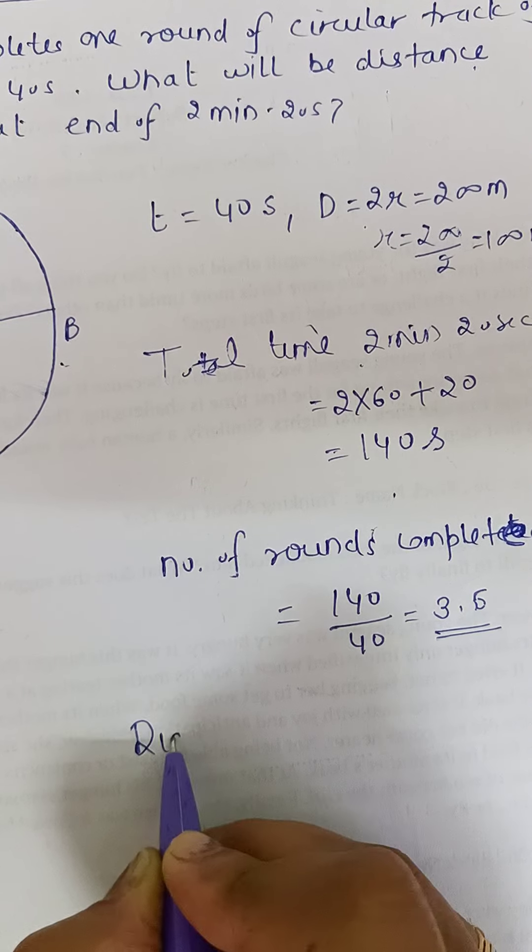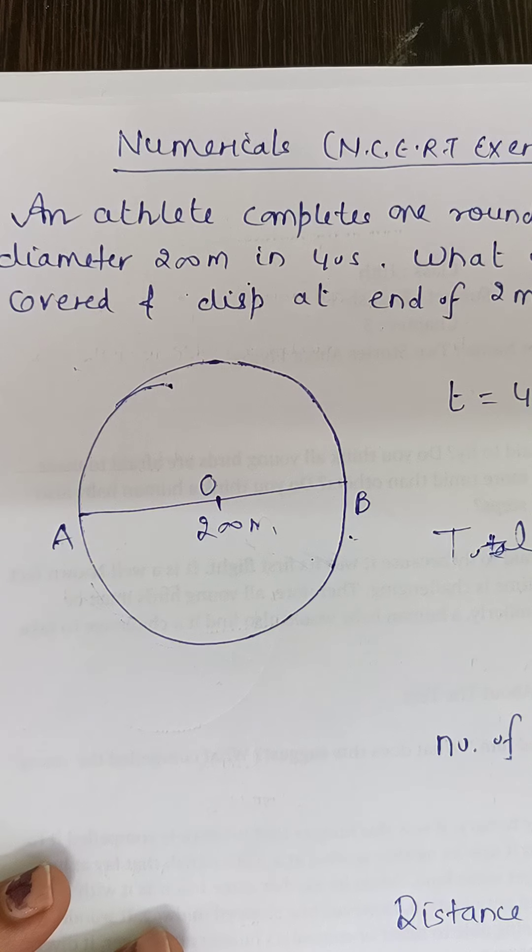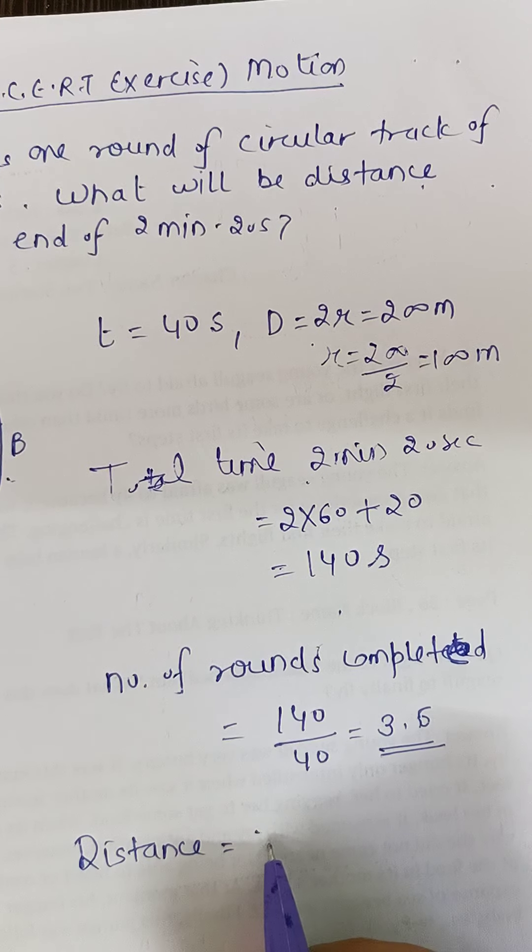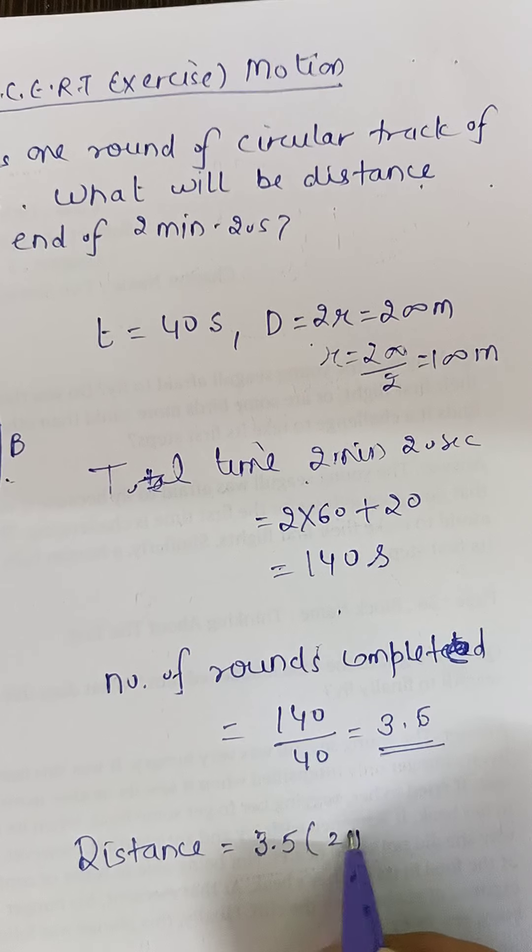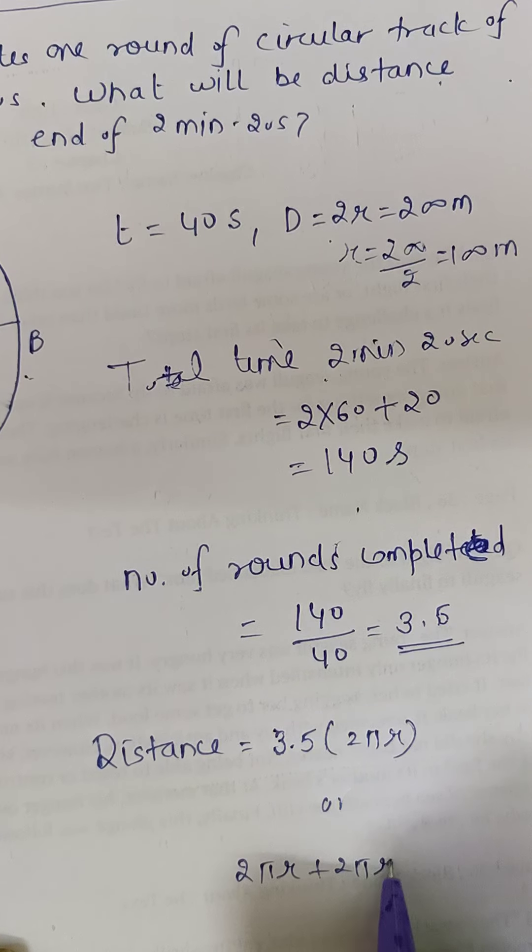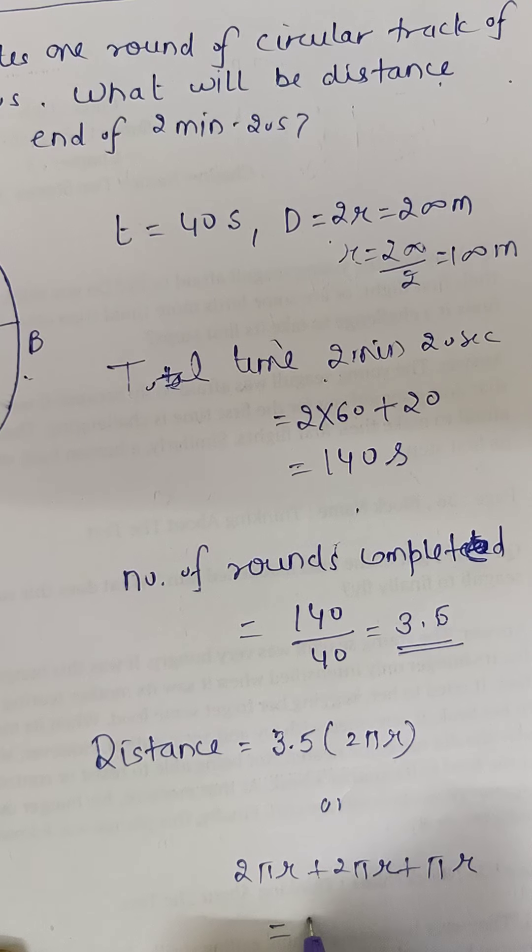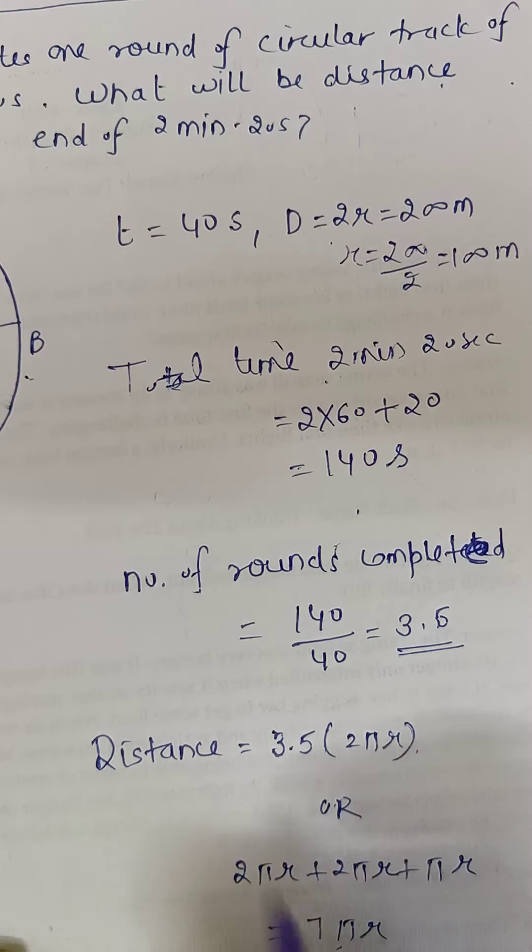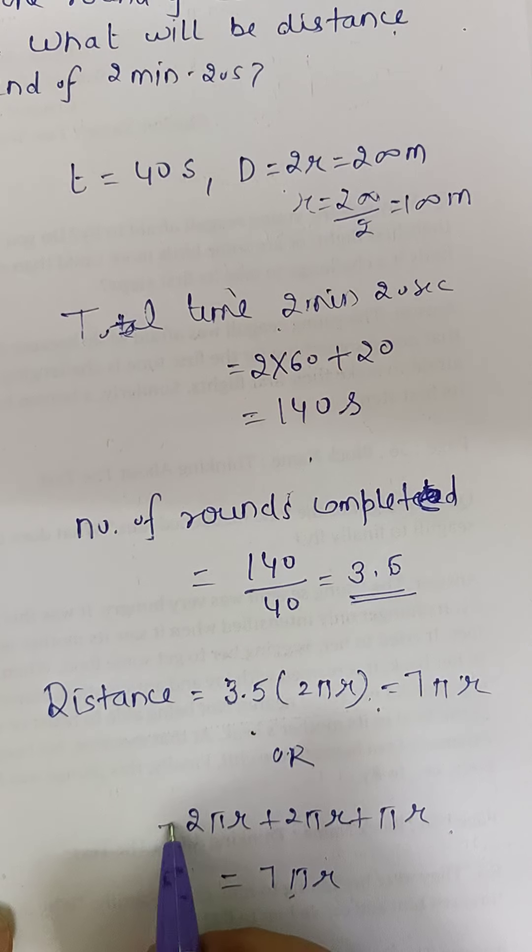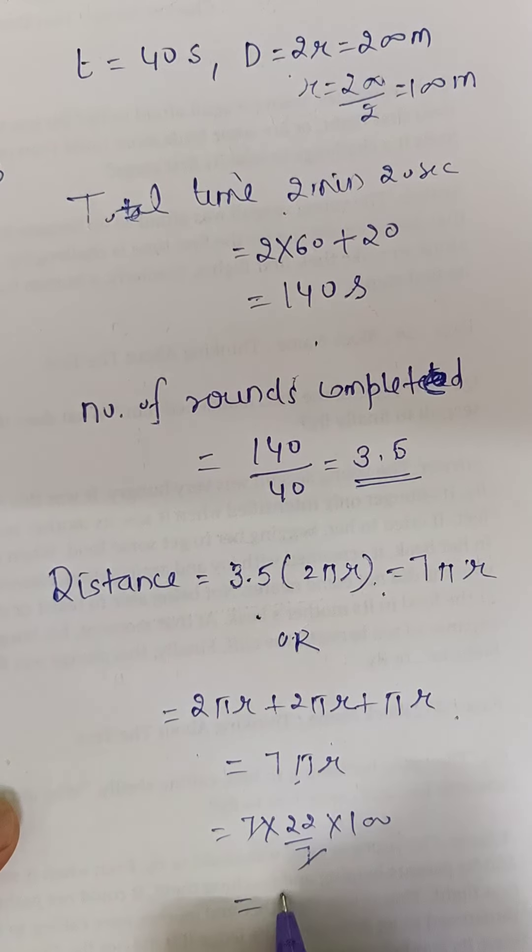Now we have total number of rounds, so distance covered. Distance covered in one round is 2πr. We have total rounds as 3.5, that is 3 and a half. So total distance will be 3.5 multiplied by 2πr. Or we can write it as one round 2πr plus second round 2πr plus third round πr. When you solve both cases, the result will be 7πr in both.